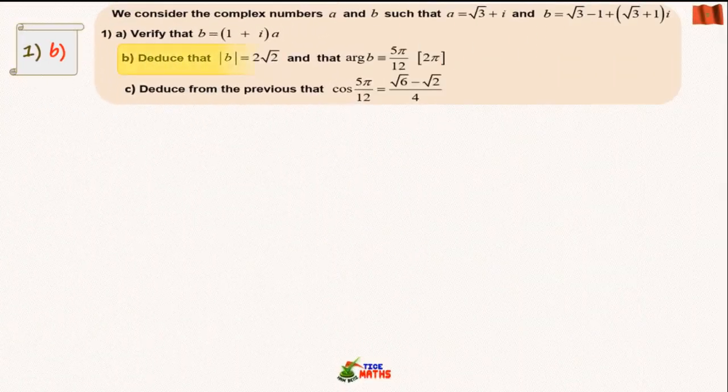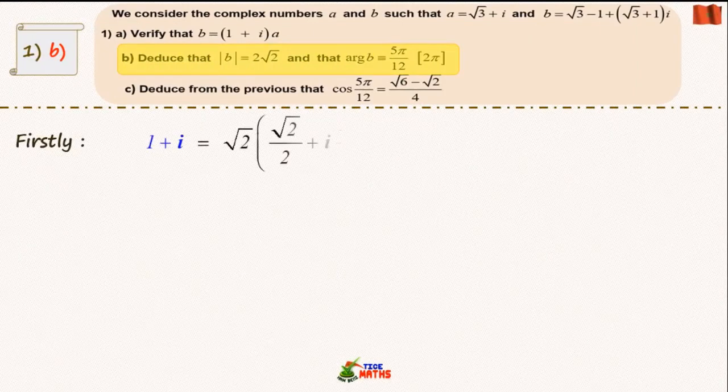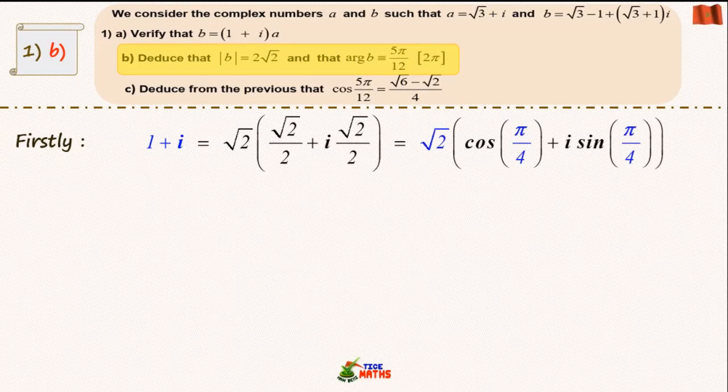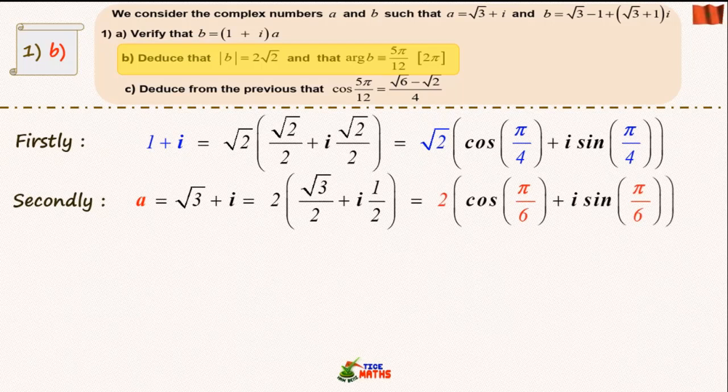Question 1b: we know how to easily obtain the trigonometric form of the two usual complex numbers 1 + i and √3 + i. We know also from the previous question that the complex number b is the product of (1 + i) and (√3 + i).